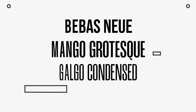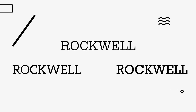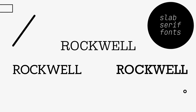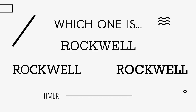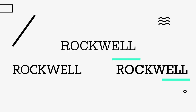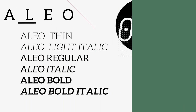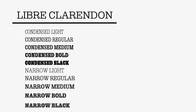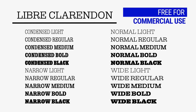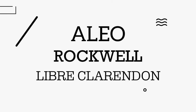Again we have three different choices, but this time we can see three different slab serif fonts — which one of these is Rockwell? The font on the far right is in fact Rockwell. The middle one is Libra Clarendon, and on the left we have Elio. Elio is a great typeface and comes in six different font styles, while Libra Clarendon is available in a whopping 20 font versions, all free for commercial use. Elio is still my top pick in this section.